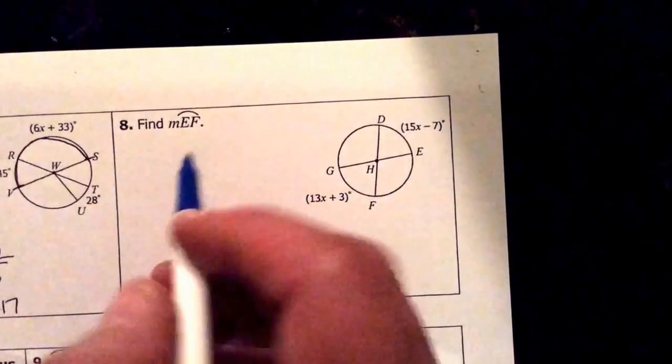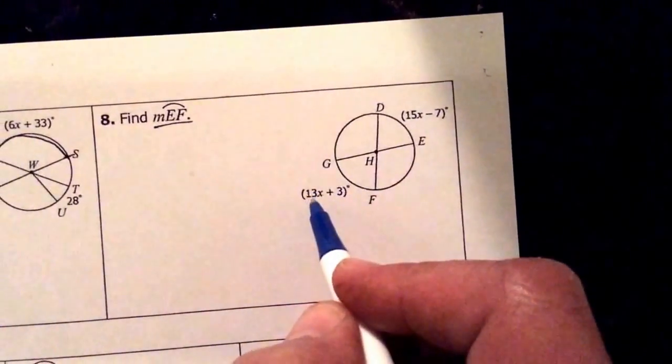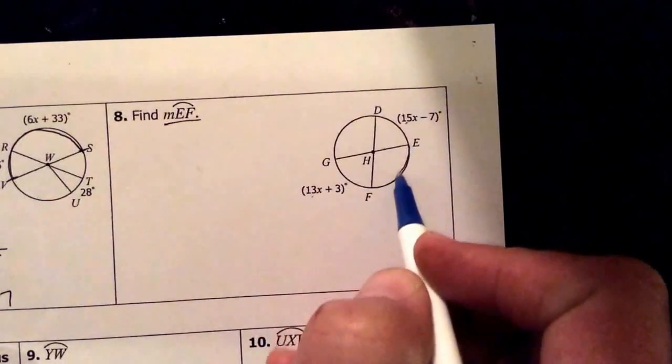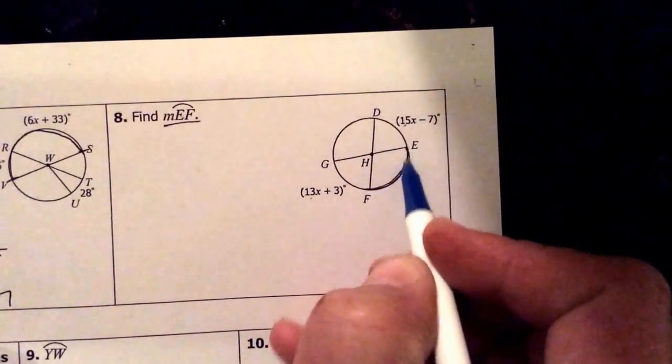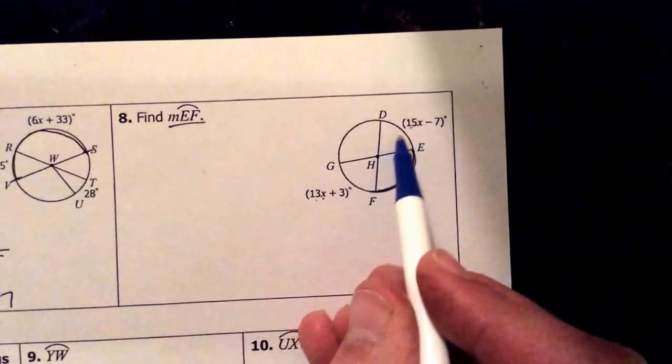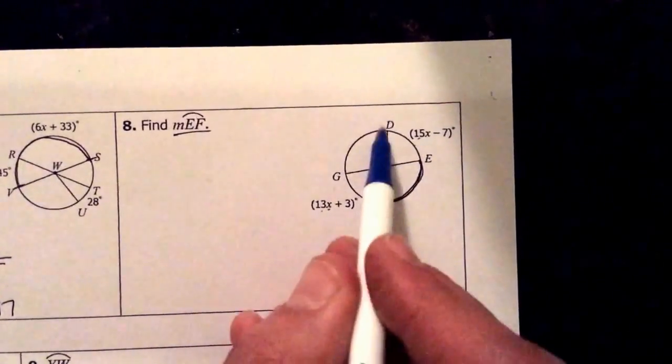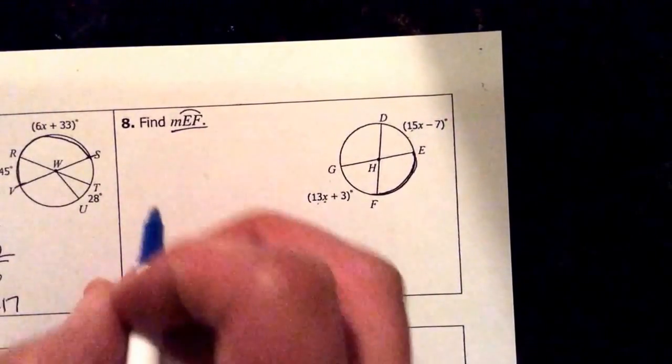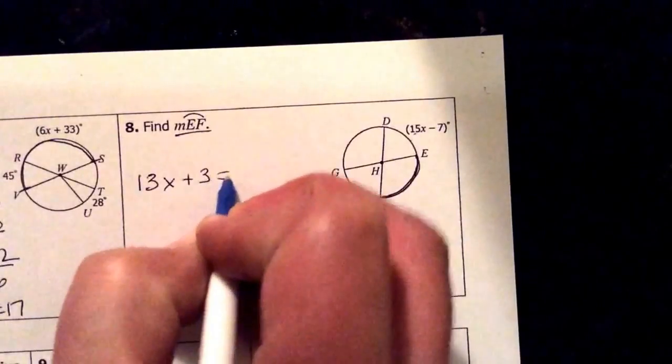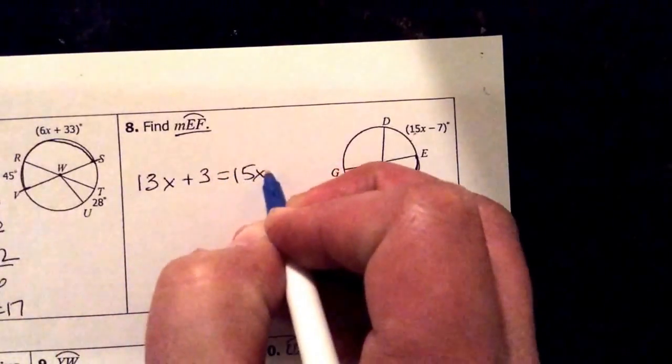The next one wants us to solve the measure of EF. So not only do we have to solve for x, we're going to have to plug it back in and figure out this missing EF here which they don't have anything labeled. But we'll figure that out. What we do know is that these two arcs right here, GF and DE, are equal to each other. They're congruent. So I can say 13x plus 3 equals 15x minus 7.